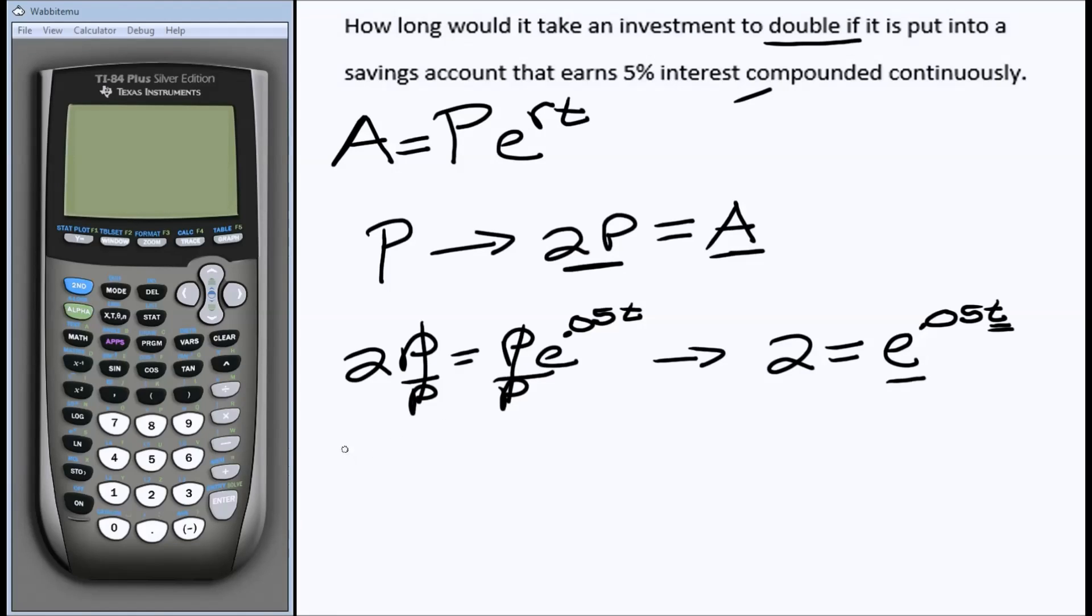In doing so, I'll take the natural log of both sides. I'm going to have the ln of 2 on the left side. And that's going to be equal to the ln of e to the .05t.